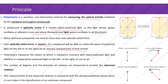Polarimetry measures the extent to which a substance interacts with plane polarized light, and whether it rotates plane polarized light to the left, to the right, or not at all. The number of degrees and the direction of rotation are measured to provide the observed rotation, which is then compared with already published values.